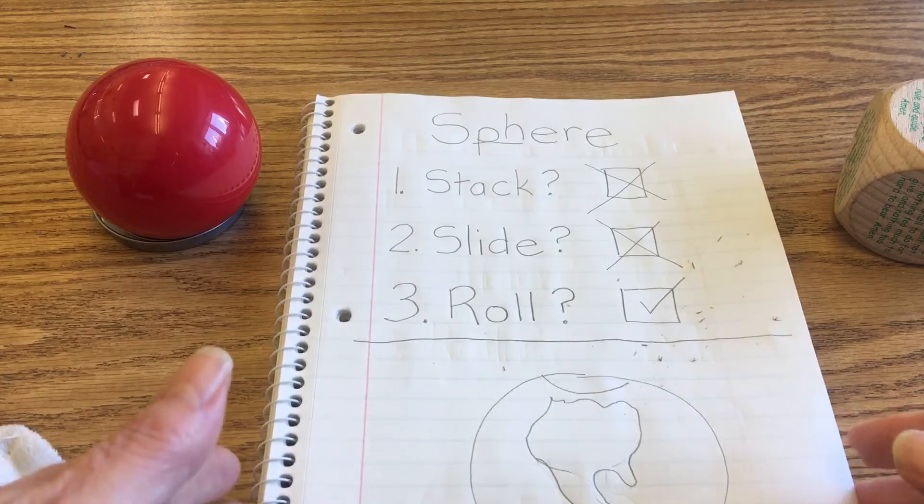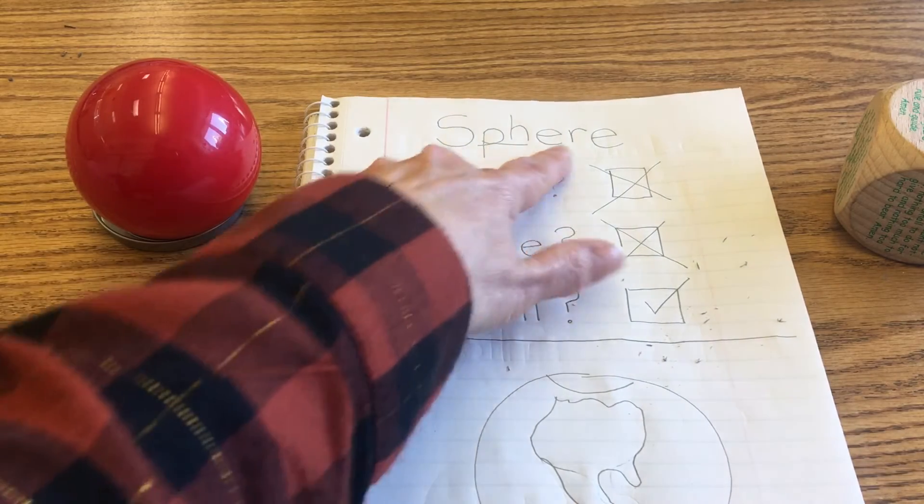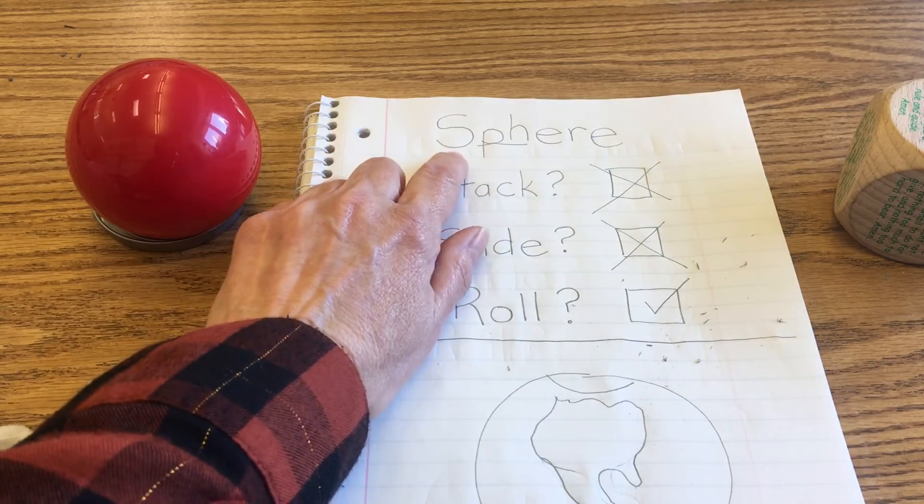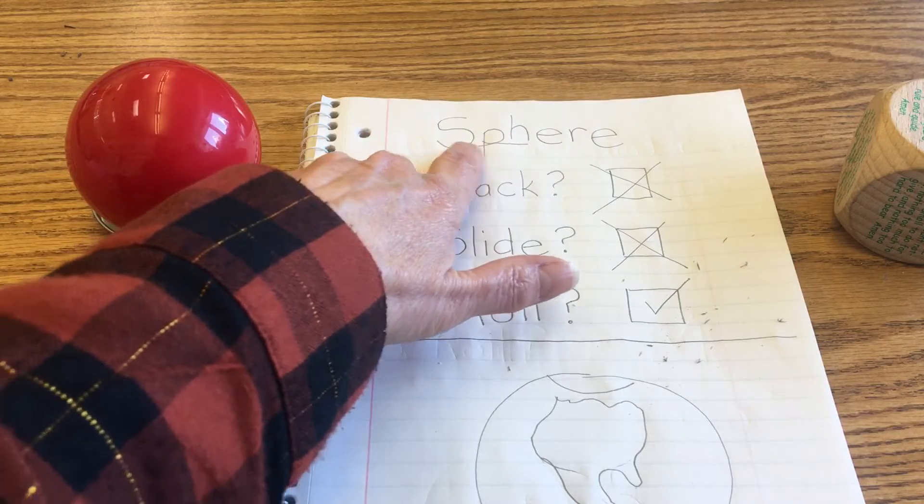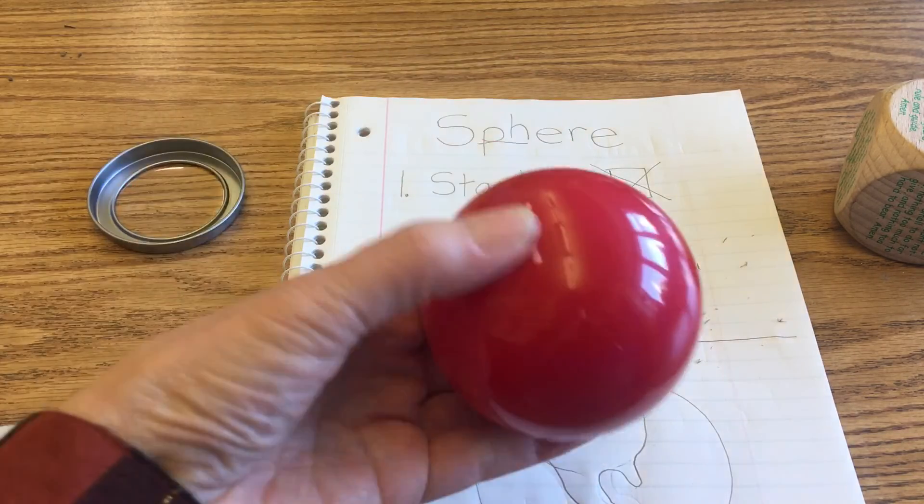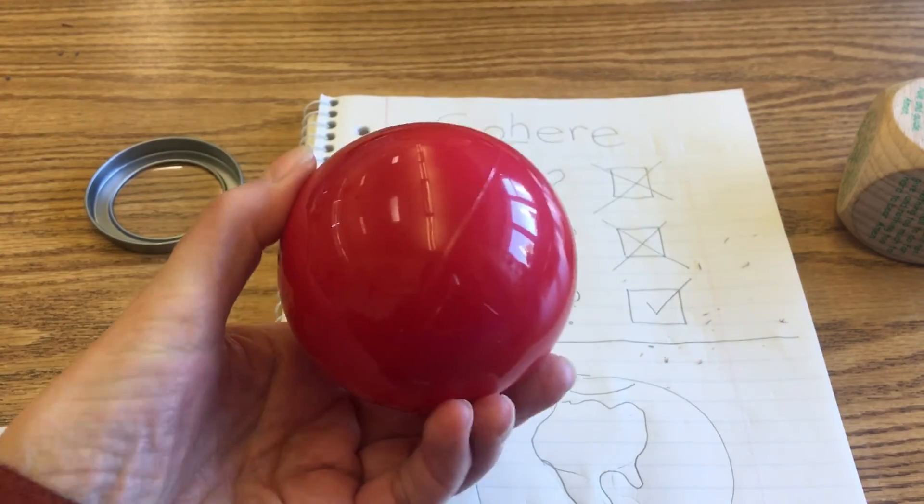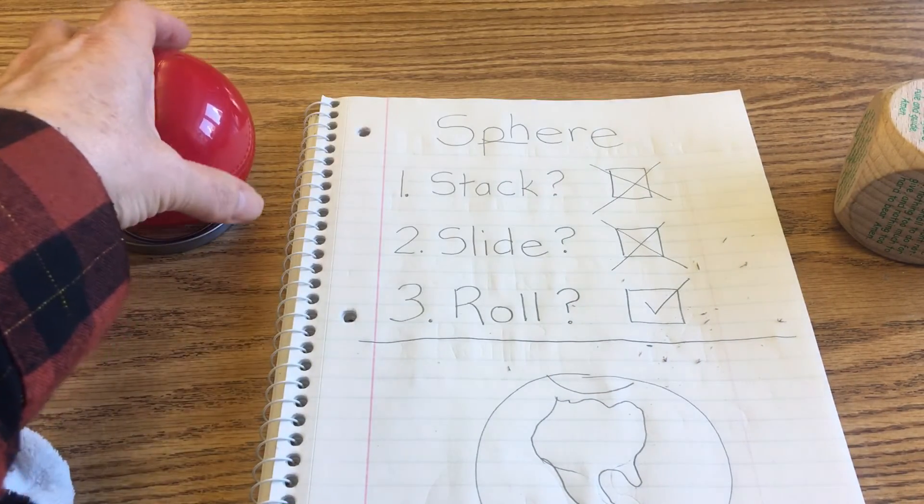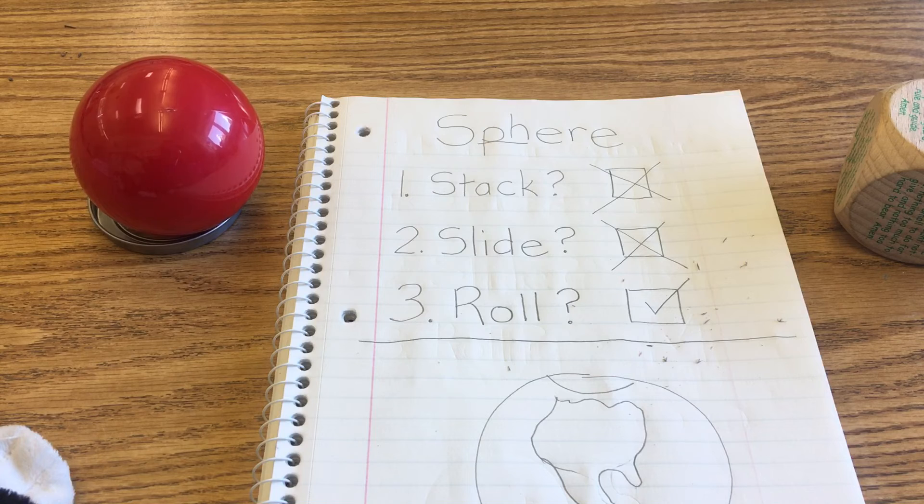So why don't you echo the word sphere for me. Sphere. Sphere. That's how you say that shape. That's a spherical shape. All right. Great. Thank you for joining me for this mystery bag today, boys and girls.